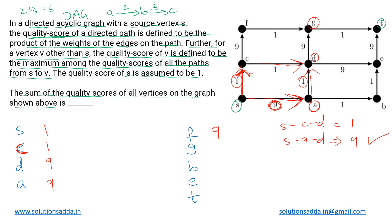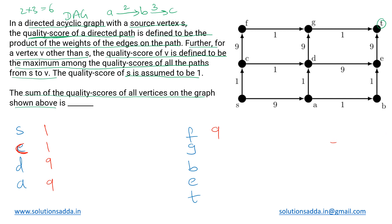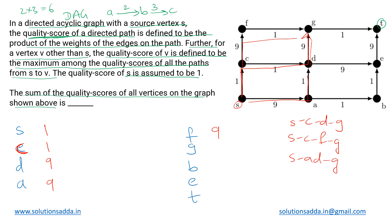For vertex g, there are three different paths from s. Path s → c → d → g gives quality score 1 × 1 × 9 = 9. Path s → c → f → g gives 1 × 9 × 1 = 9. Path s → a → d → g gives 9 × 1 × 9 = 81. Taking the maximum, the quality score of g is 81.